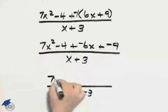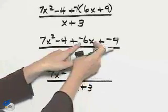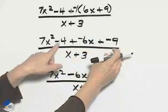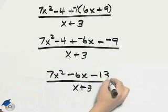I will have 7x squared plus a negative 6x is minus 6x. Negative 4 plus negative 9 is minus 13.